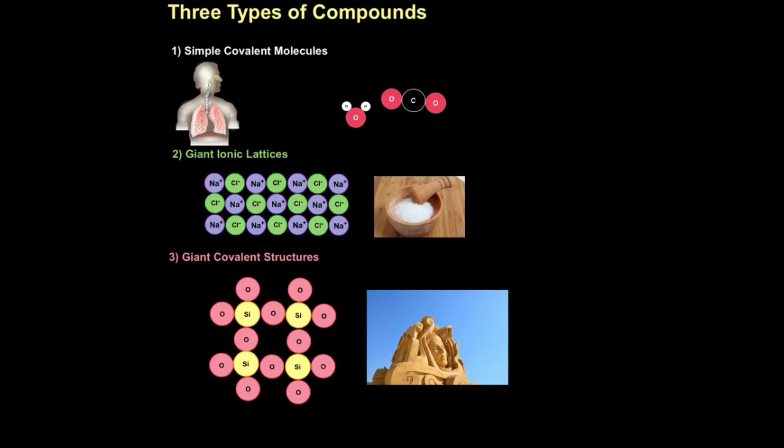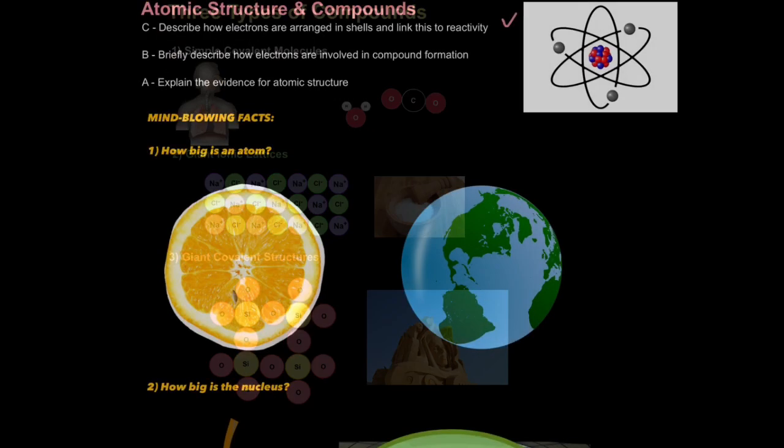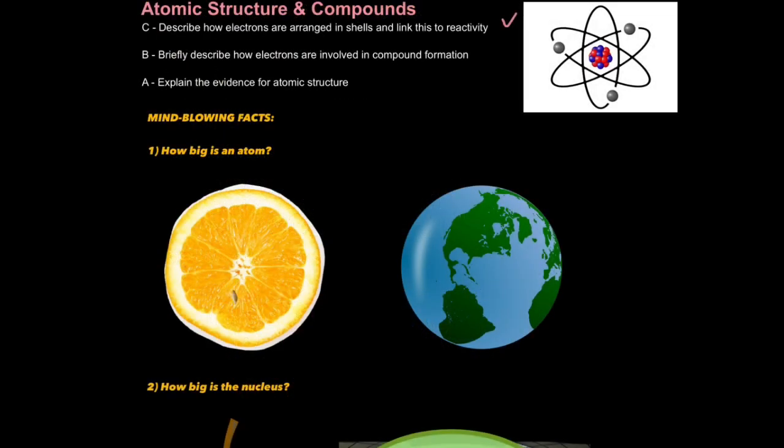Similarly, you can get giant covalent structures. But remember here, we haven't got electron transfer like we do in giant ionic lattices, but rather these atoms are sharing electrons. An example of a giant covalent structure is silicon dioxide, which you may better know as sand. So, if you understand that electrons can be transferred to form certain types of compounds called ionic compounds, or they can be shared to form other compounds called covalent compounds, then you can describe how electrons are involved in compound formation. Second aim done.